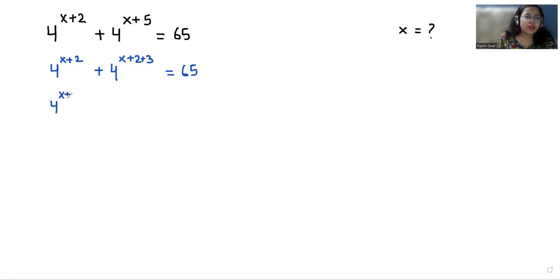Now 4 power x plus 2 plus 4 power x plus 2 times 4 power 3, according to exponent rule x power m plus n we can write it as x power m times x power n, equals 65.